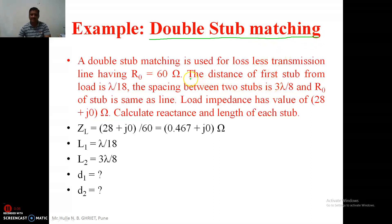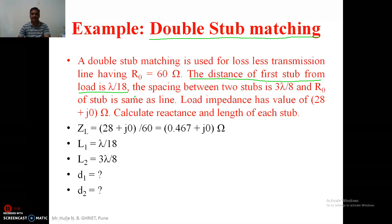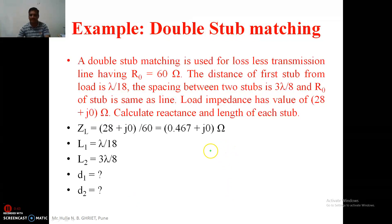The difference between the previous video and this video is that in this case the distance between the stub from the load is lambda by 18. In the previous example we have seen that the first stub is located at the load itself and the second stub is separated by maybe 3 lambda by 8 or maybe lambda by 4 and so on. Here we will see the methodology for this particular calculation.